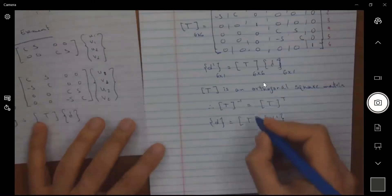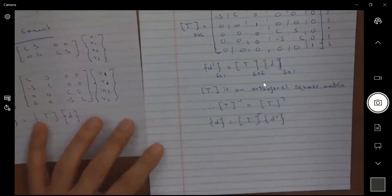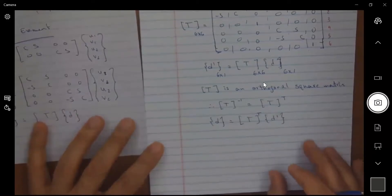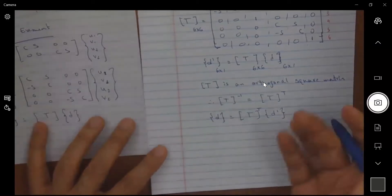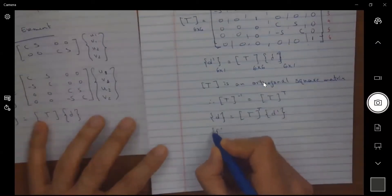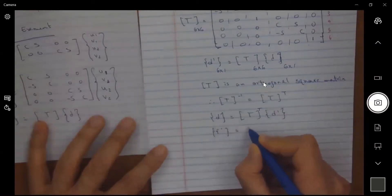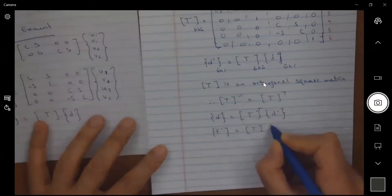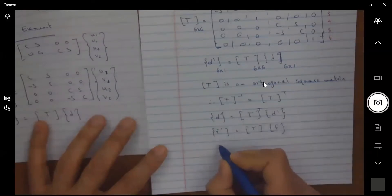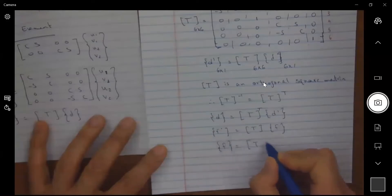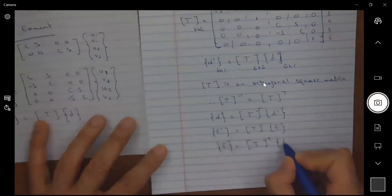And because of that I can say that also d is equal to T transpose multiplied by d prime. T transpose also f prime is equal to T times f and f is equal to T transpose times f prime.